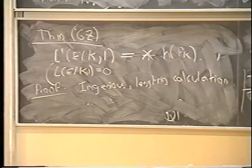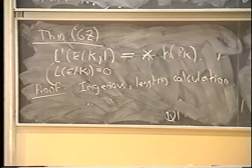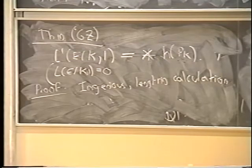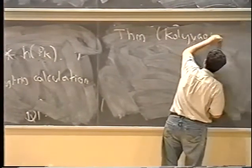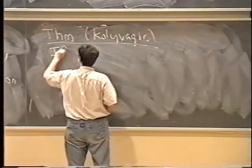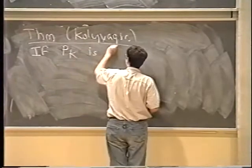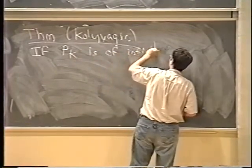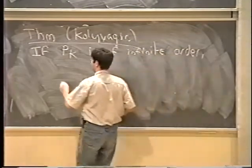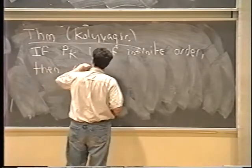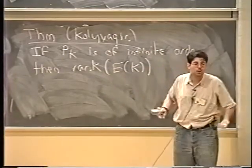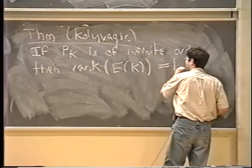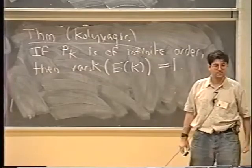The second result is the theorem of Kolyvagin, which says that if the Heegner point P_K is of infinite order, then the rank of the Mordell-Weil group of the elliptic curve over the quadratic imaginary field K is exactly one. So Kolyvagin's theorem provides an upper bound for the rank when this Heegner point is a point of infinite order.